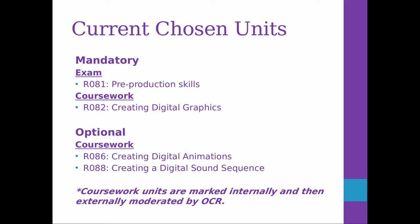More detail about the individual units will come later, but these are the ones we've chosen at Farringdon. R081 you have to do as an exam — pre-production skills. The first coursework is R082, creating digital graphics — that's a mandatory one. Then the ones we've chosen: R086, creating digital animations, so you're going to create an actual video that you've created all the artwork for. And R088, creating a digital sound sequence — things like a podcast or a radio advert or something along those lines.